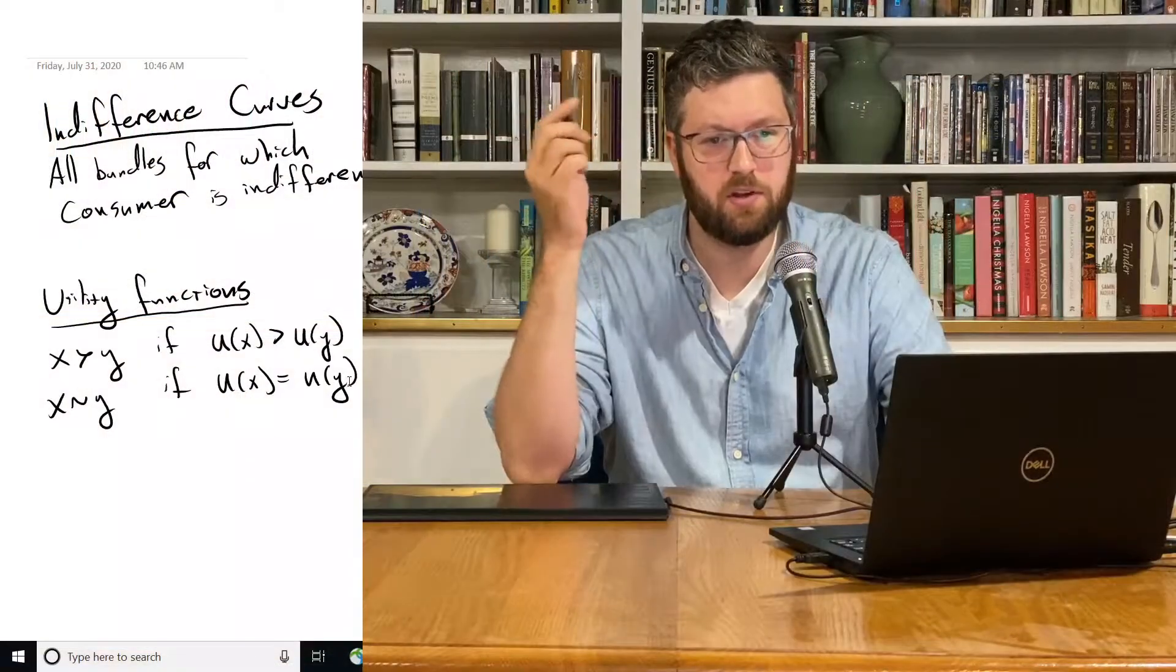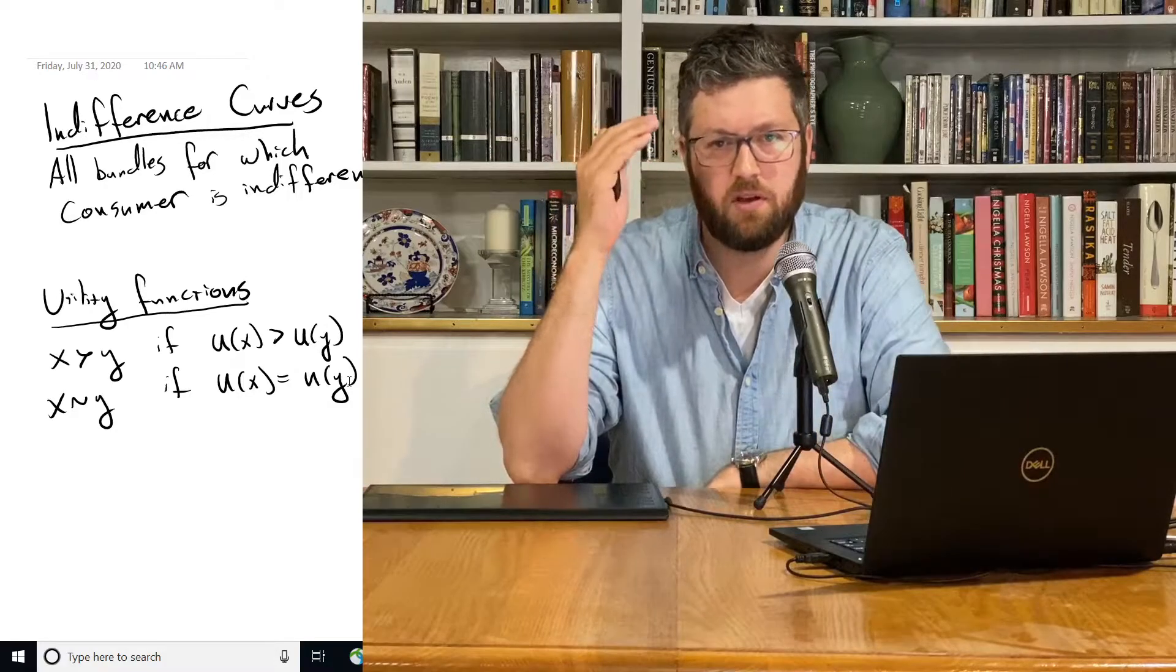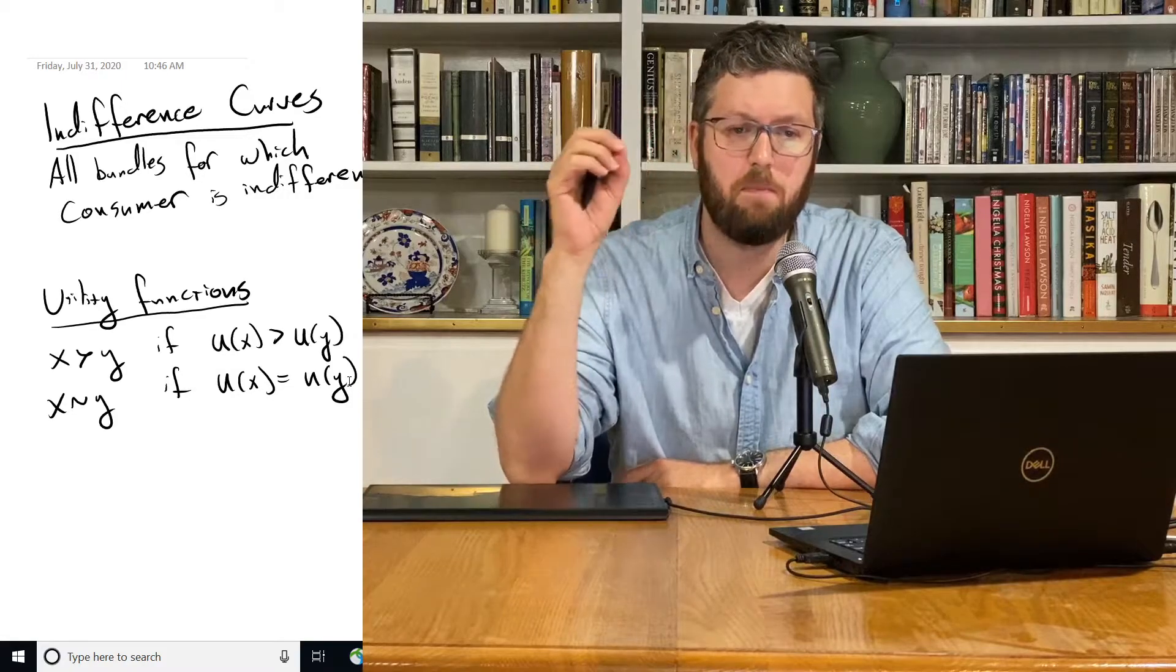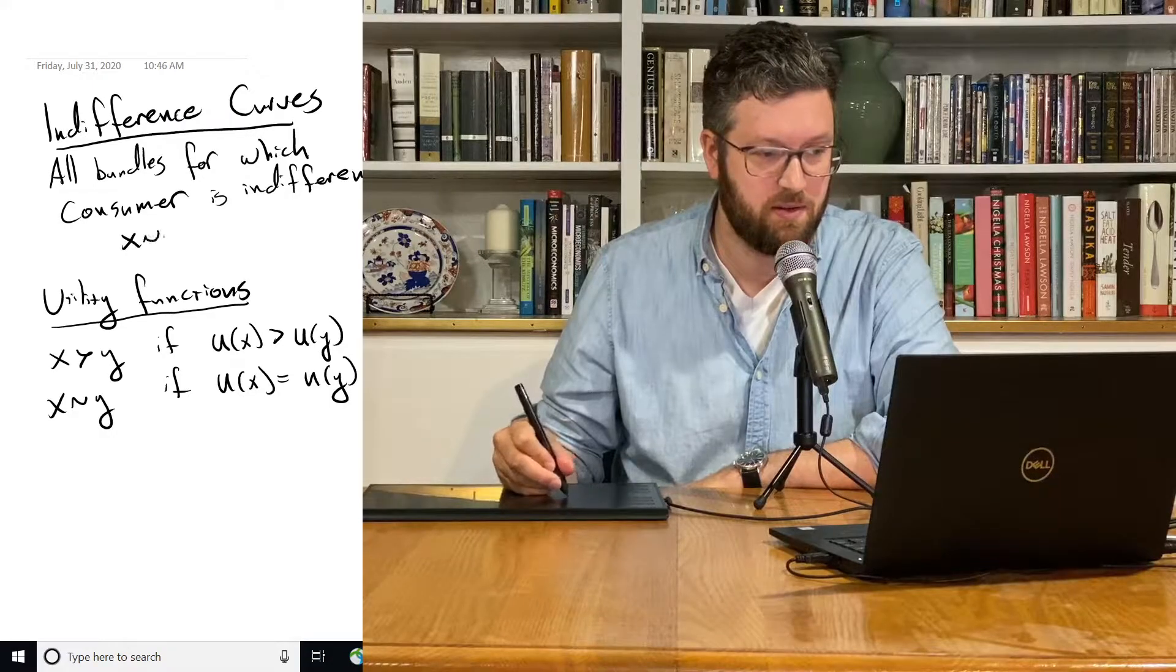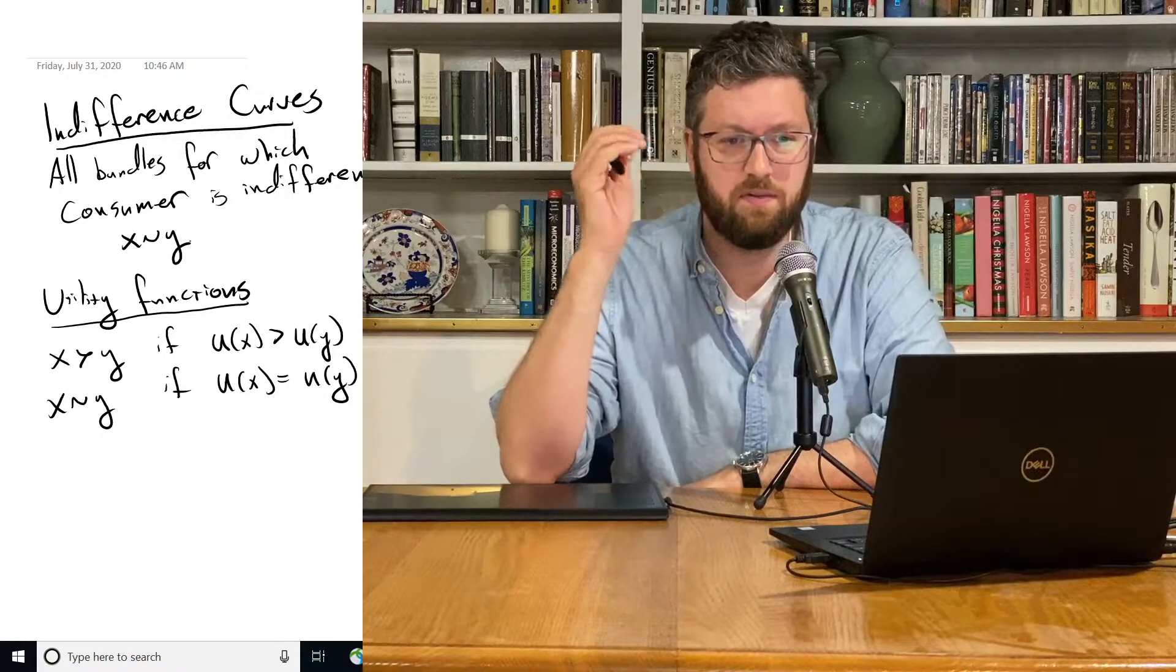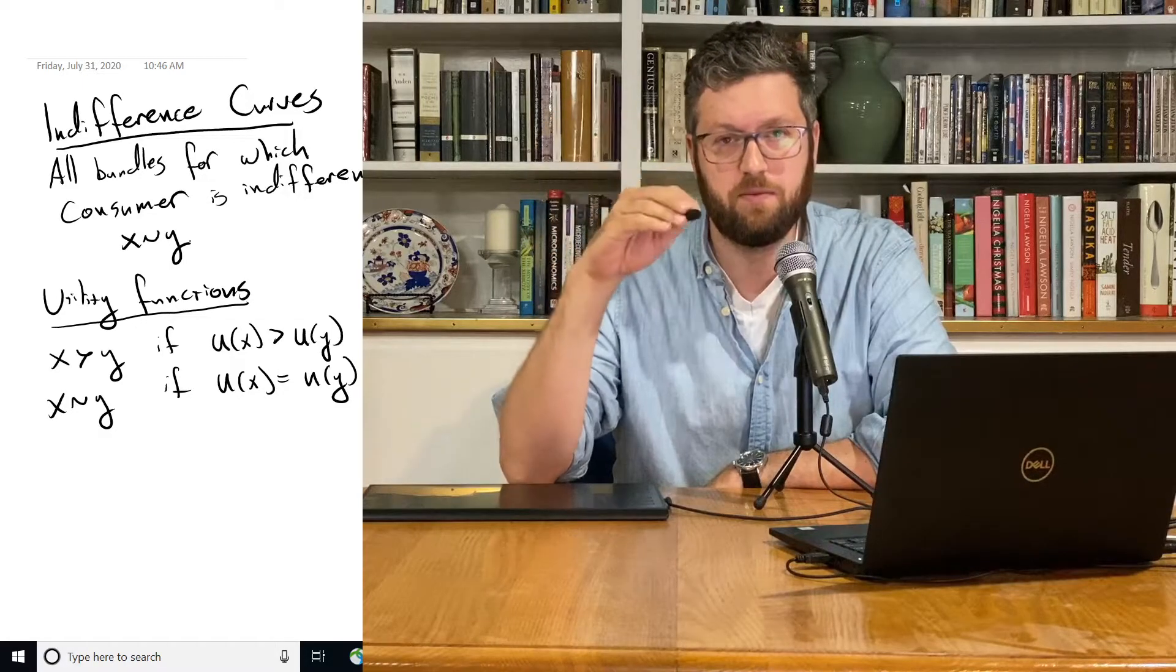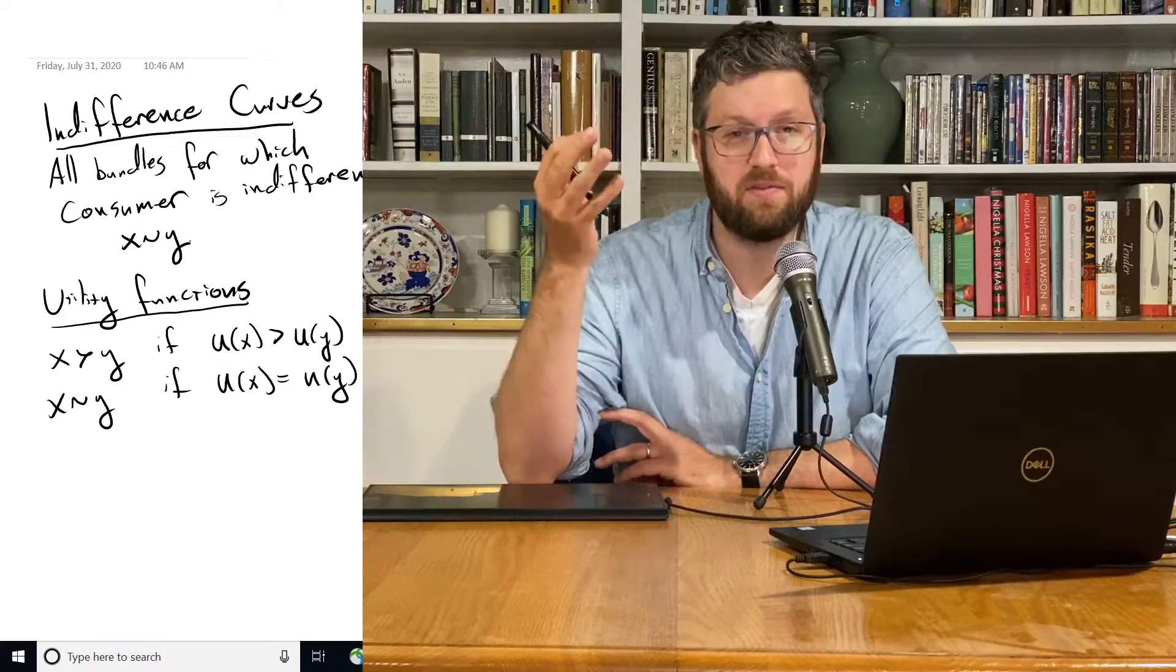Okay, so we can rethink how we study indifference curves now that we've built this idea of a utility function. So where we started with an indifference curve is it's all, if we draw this little diagram and we have this line, it corresponds to all bundles for which the consumer is indifferent. And that means, that's our little notation for indifferent, a little squiggly line indicates that the consumer is indifferent between x and y. A utility function represents the same preferences using numbers.